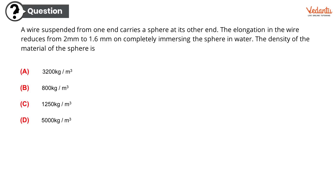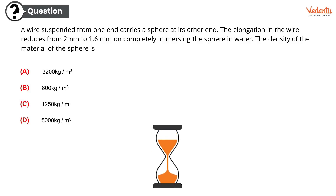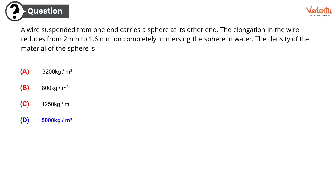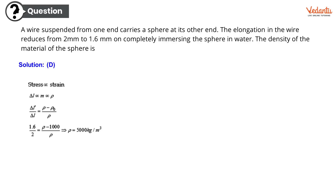It's been a difficult problem, but I have complete trust in you. You will be able to do it. The correct option comes out to be option D, 5000 kg per meter cube. And here goes the solution.